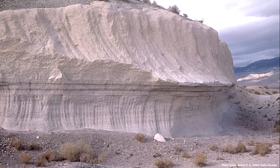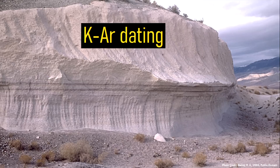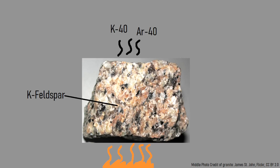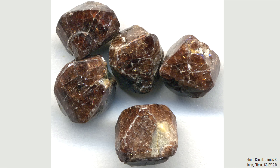A similar methodology is used for older samples via potassium-argon dating. In this case, minerals rich in potassium are heated in a lab, and then the ratio of the radioactive potassium-40 to radioactive argon-40 is measured to determine a sample's age.